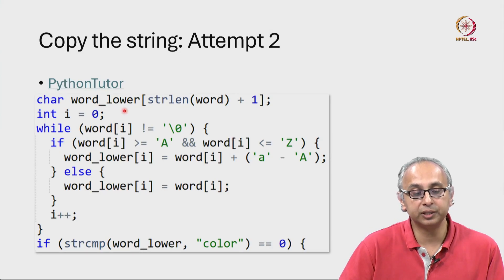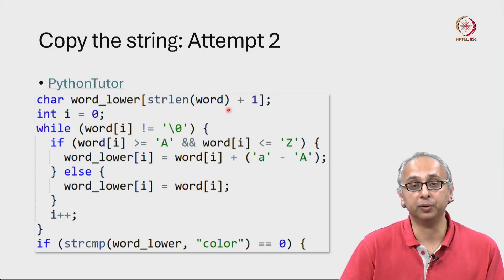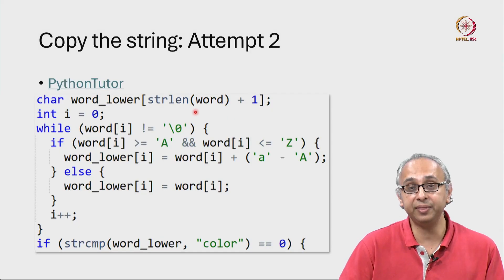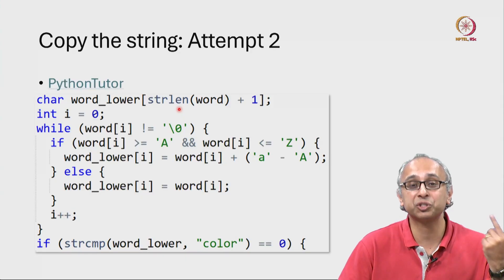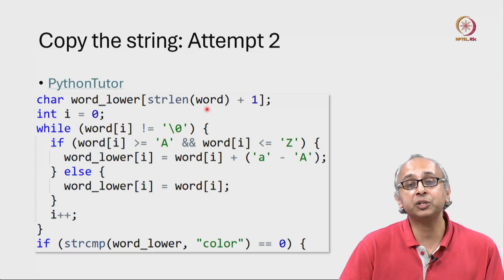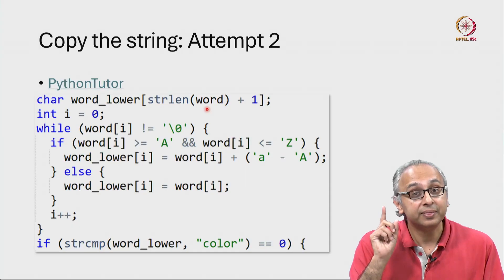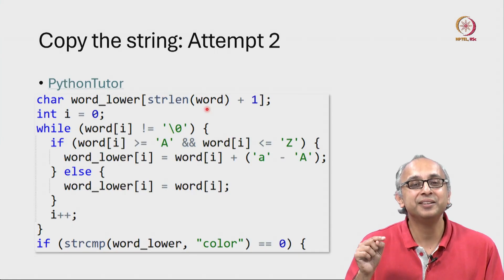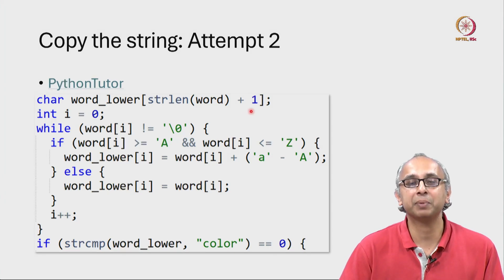We say char word_lower which is an array of characters and it is suitably long. Remember that the original word has a certain length and there is a helper function strlen declared in string.h which will calculate how many letters the given word has. That strlen function does not count the null character at the end of that word and that is why we have plus 1.